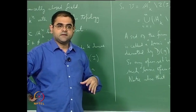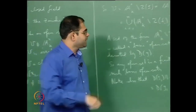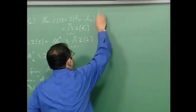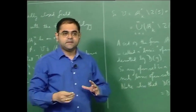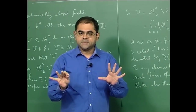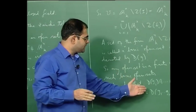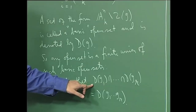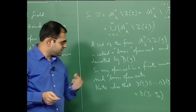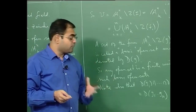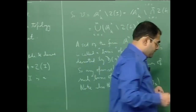This justifies the terminology 'basic open set' from the topological point of view. The open sets for the Zariski topology are built up by simply taking finite unions of basic open sets, where each basic open set is given by the locus of non-vanishing of a single polynomial.